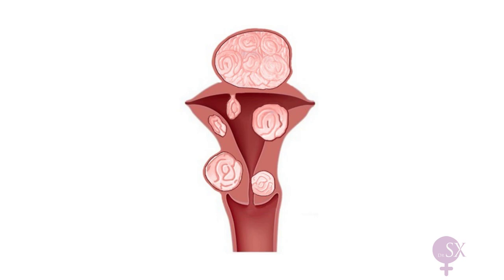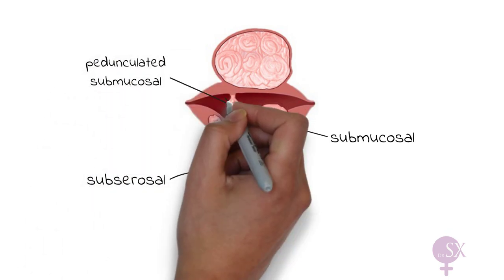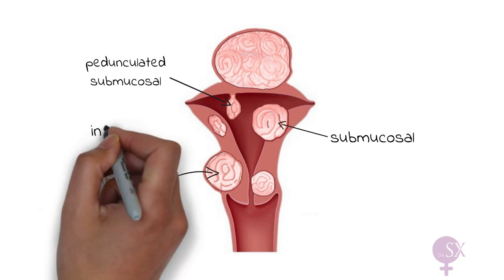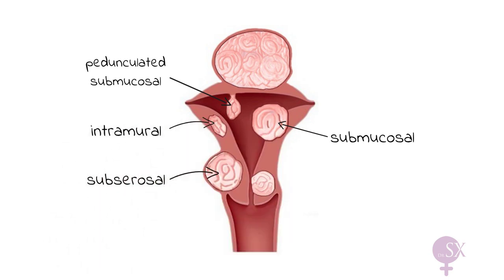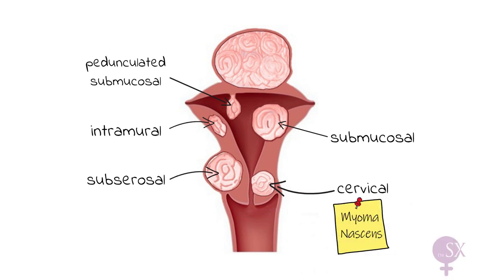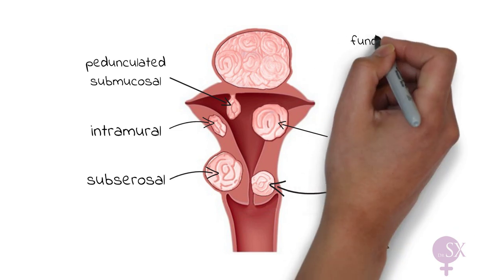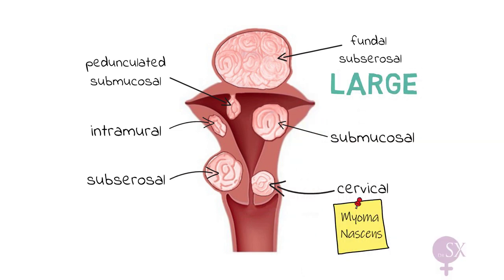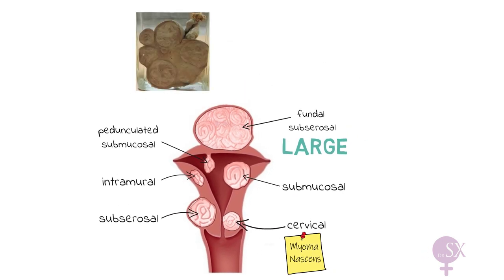Fibroids can grow in different locations. You can have subserosal fibroids, which are present under the peritoneum. Submucosal fibroids are present just under the endometrium and tend to distort the uterine cavity, so they can cause problems in terms of fertility. They can also grow into the cavity of the uterus and are then called pedunculated submucosal fibroids. Intramural fibroids are located within the myometrium. Cervical fibroids grow in the cervix, and sometimes fibroids might also prolapse out of the cervix. As you can see from this fundal fibroid, fibroids can also grow very large, and patients can present with a mass in their abdomen. On cross-section, they tend to have a whorled appearance, as you can see from this picture.